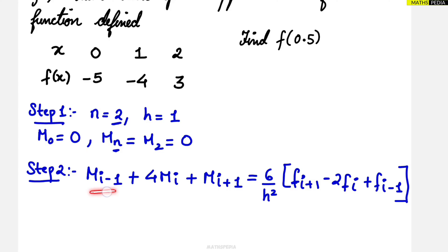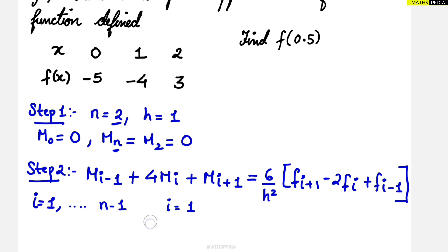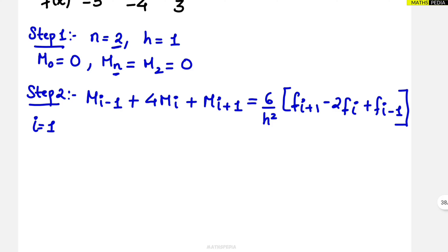The formula is: M(i-1) + 4*Mi + M(i+1) = 6/h² * [f(i+1) - 2*f(i) + f(i-1)]. Here i starts from one and goes till n minus one. What is n? It is two, so n minus one is one — meaning only i equal to one needs to be calculated. If n were three, then i equal to two would also come. Here only i equal to one, so we substitute to get M1.